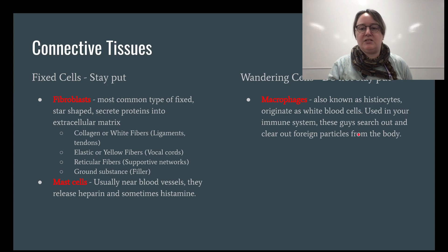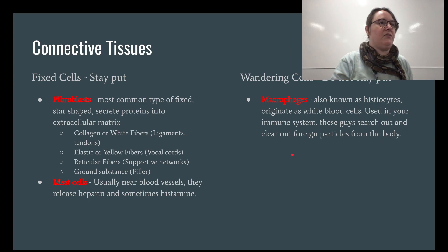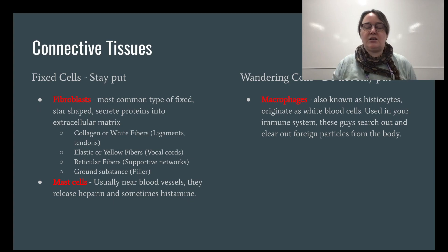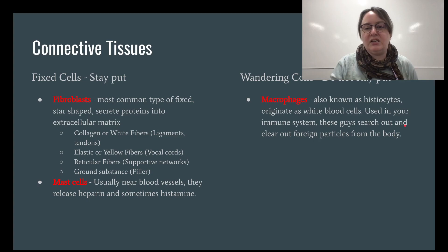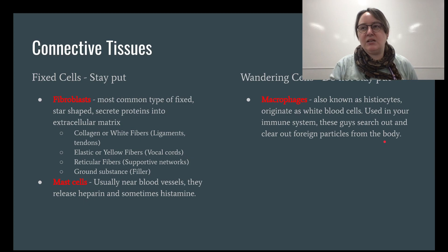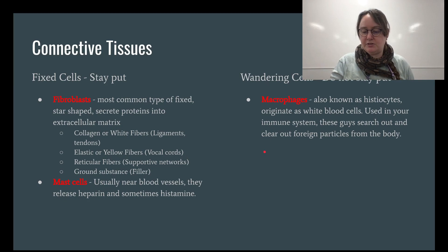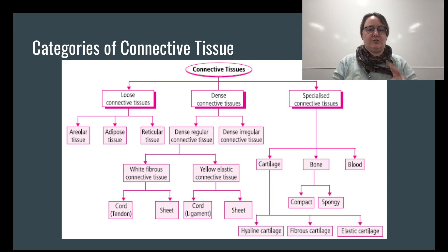Wandering cells include macrophages, also known as histiocytes. These originate as white blood cells and are used in our immune system. They're always patrolling, looking for anything trying to break through — bacteria, viruses, anything that isn't 'you.' They eat invaders. Macrophages are easy to find under a microscope because they're large. In the next chapter we'll see them wandering around between our skin cells looking for trouble.